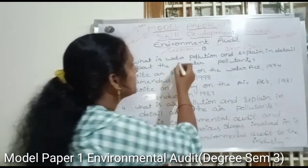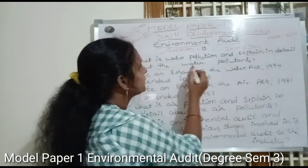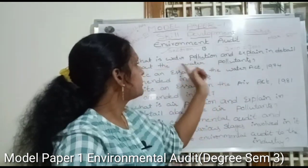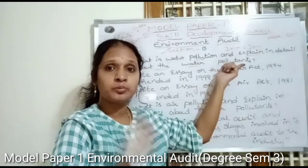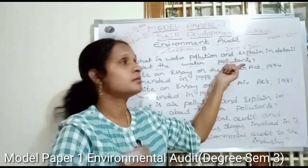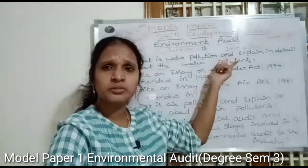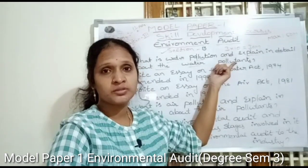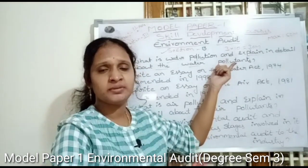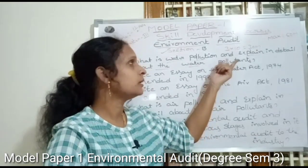First question in Section B: What is water pollution? Explain in detail about the water pollutants. Water pollution refers to the contamination of water. The reason is that water gets polluted by various factors and pollutants.